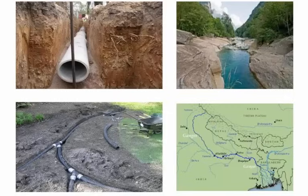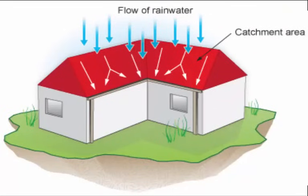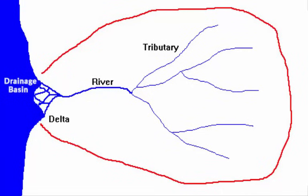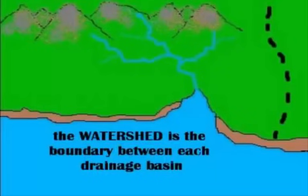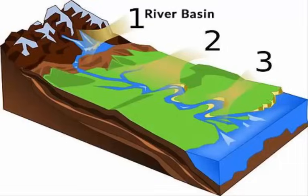When a river drains the water collected from a specific area, that area is called the catchment area. When an area is drained by a river and its distributaries, it is called a drainage basin. A watershed is the boundary line between each drainage basin, and the catchment area — the source of the river where the water is initially collected — is called a river basin.